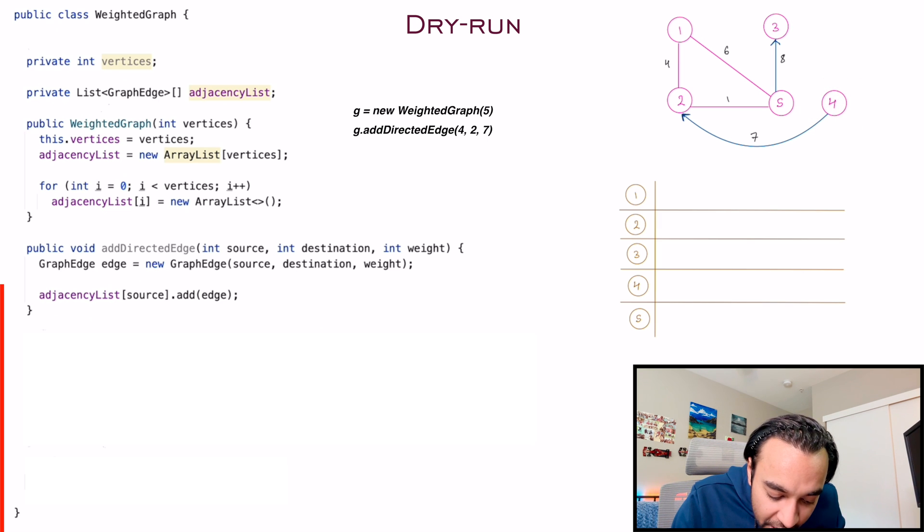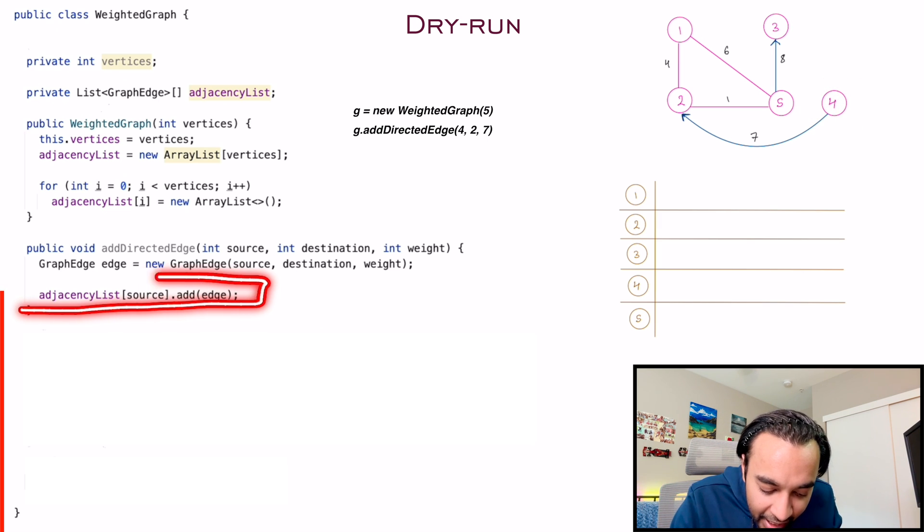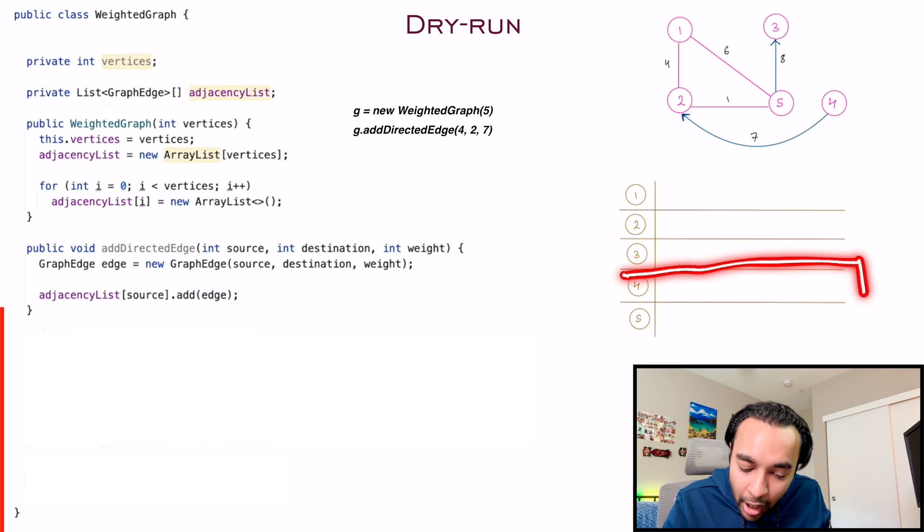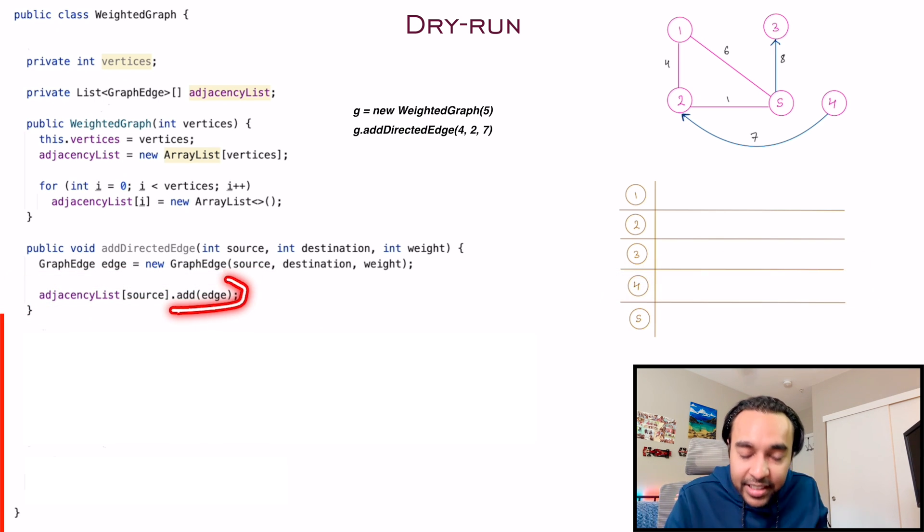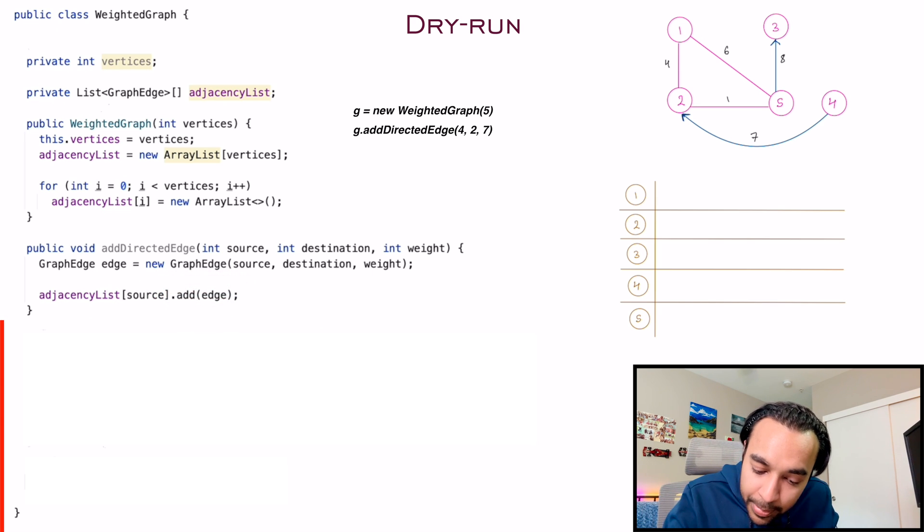So what I do, I say adjacency list, and I'm looking at my source. My source is four. So I'm over here now. And then I add this edge in here. So this particular edge will get added over here as an object.